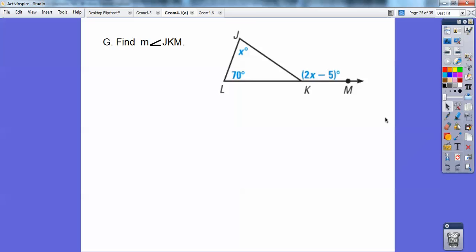So this exterior angle here equals the sum of this angle plus this angle right here. It's equal to the sum of the two remote interior angles. So here I get, when I do the 2x minus 5 equals 70 plus x, I get x equals 75. X is typically not the answer, so plug in x for JKM. I'm going to plug it in right there. And so when I plug it in, I get 145 degrees.